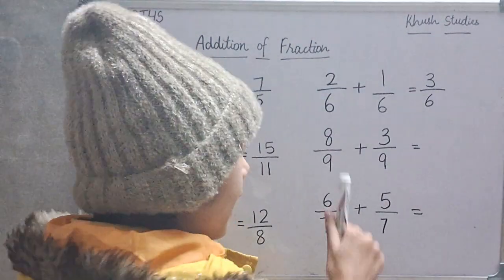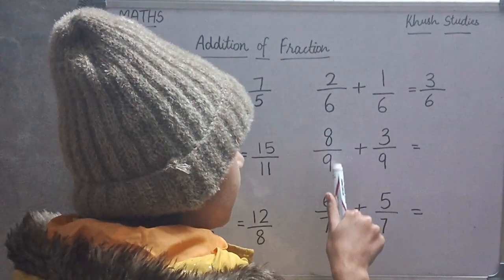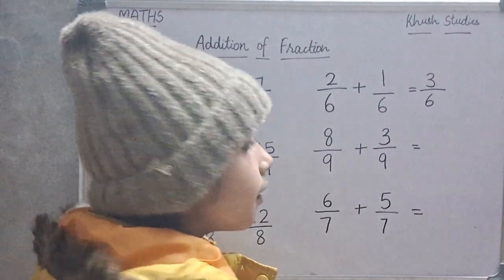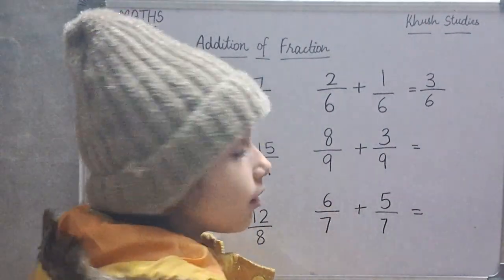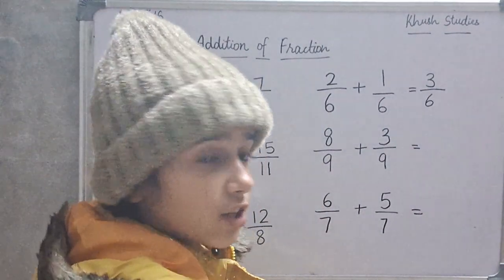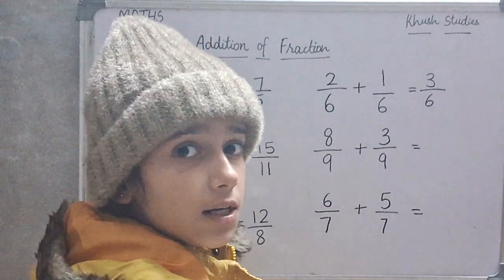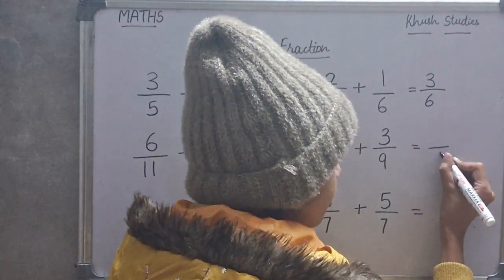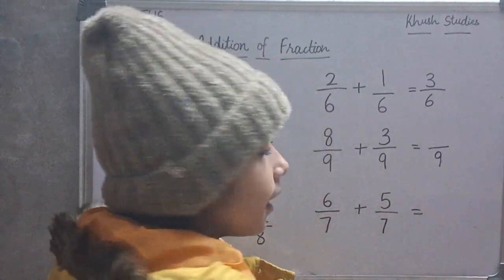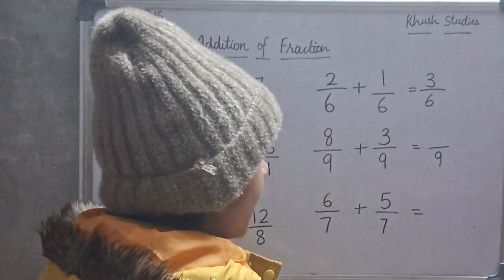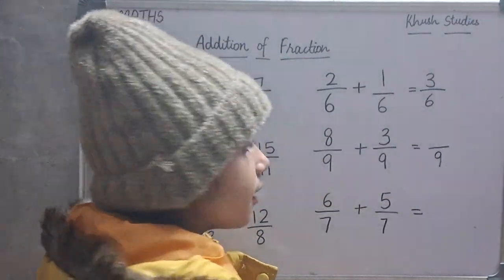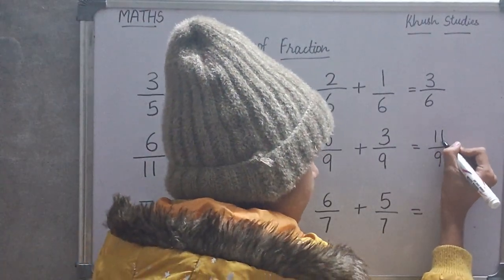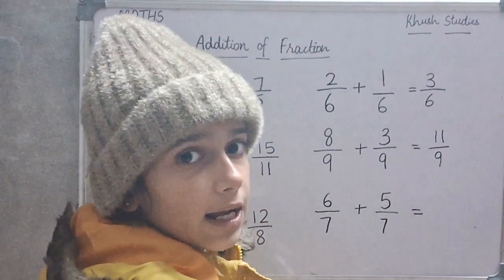Now, we will add 8 upon 9 with 3 upon 9. In both the fractions, denominators are same. So, we will add 8 plus 3, which is 11. The answer is 11 upon 9.